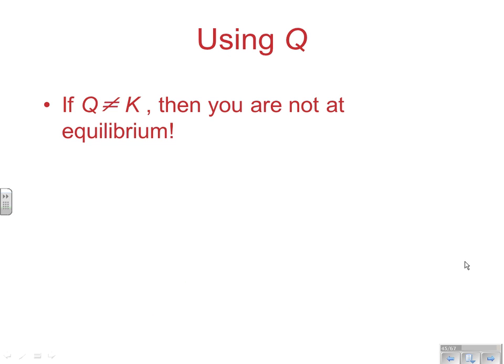Now, if Q does not equal K, then remember, you are not at equilibrium. That's exactly what that means, and that's important. So when Q is not the same as K, we're not at equilibrium.